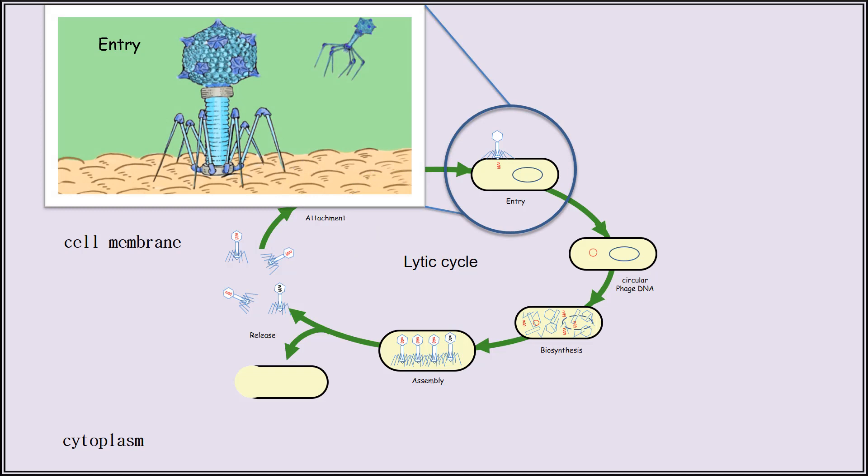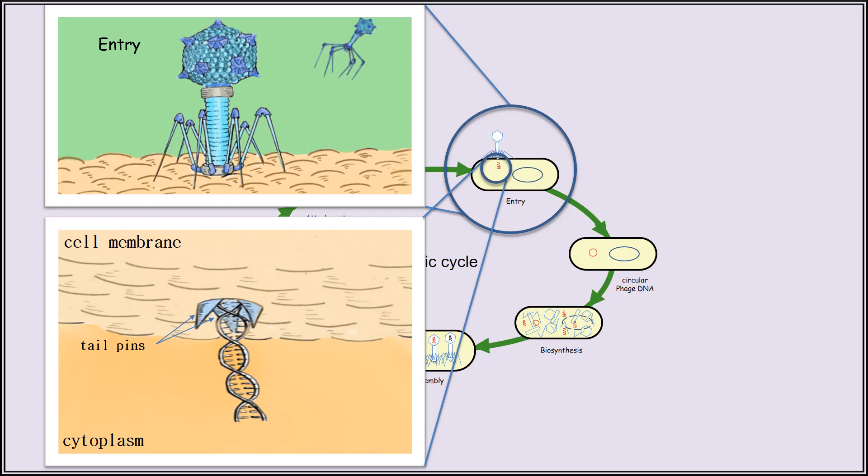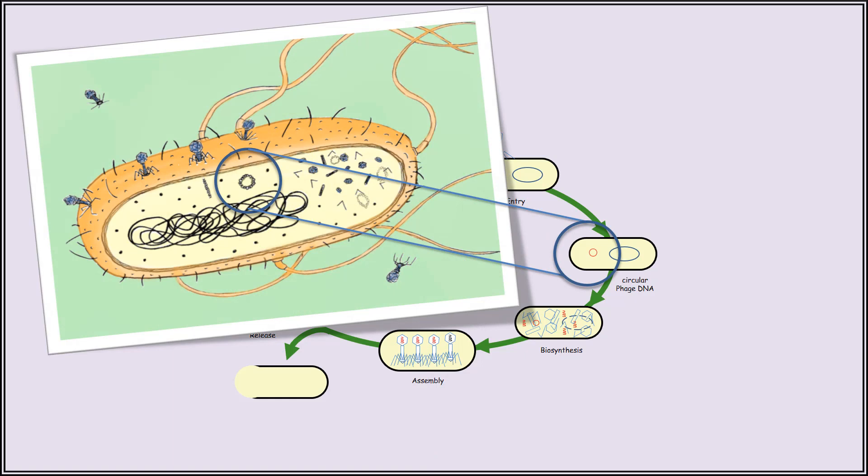Next, the virus will react by contracting its tail, pushing its tail pins through the bacterial cell membrane, and injecting its DNA inside the cell like a syringe. This is called the entry step.